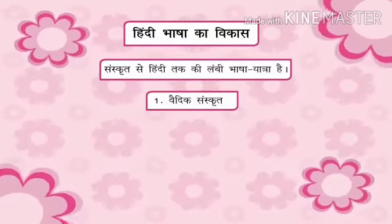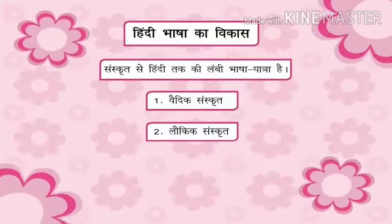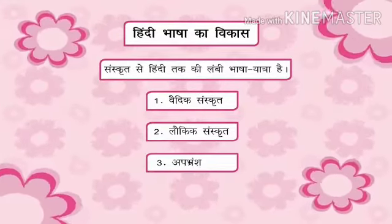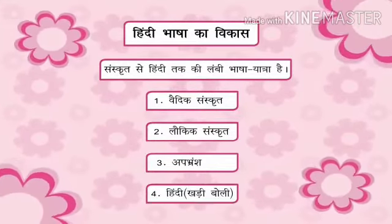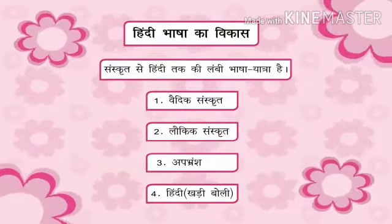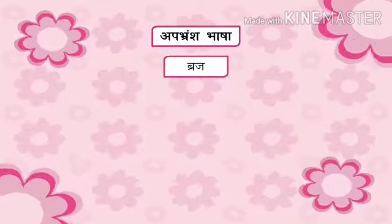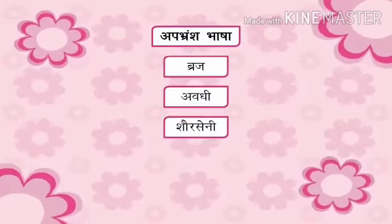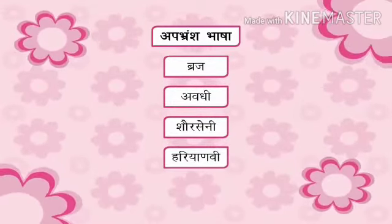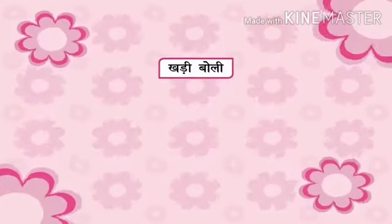1. Vaidik Sanskrit, 2. Lokik Sanskrit, 3. Apabhransh, 4. Hindi — Khari Boli. Hindi Apabhransh se vikasit hui hai. Apabhransh bhasha ke ansh aaj bhi Braj, Avadhi, Shauraseni, Haryanvi evam Rajasthani bhasha ke roop mein hain.